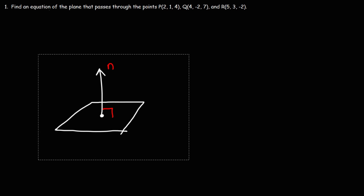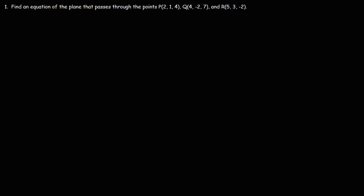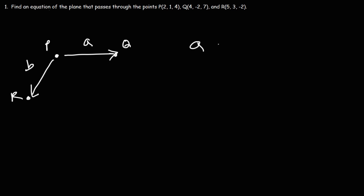We have three points. We could use any one of those three points to define the plane. The only thing that we're missing is the normal vector. Let's say this is point P, this is Q, and this is R. Vector PQ we're going to call vector A, and vector PR is going to be vector B. If we take the cross product of these two vectors, it will give us a normal vector perpendicular to both A and B. That's how we find the normal vector given three points.